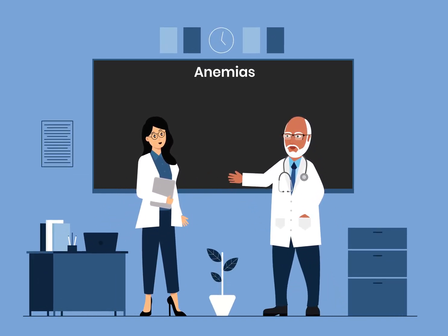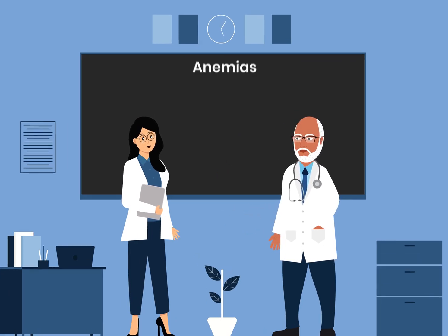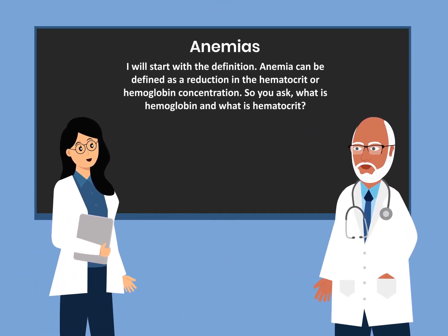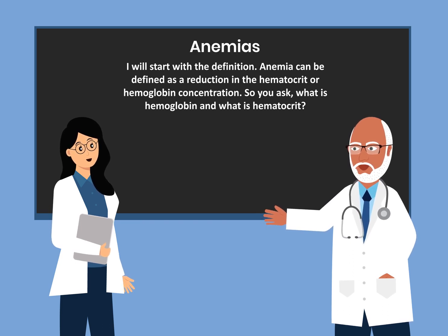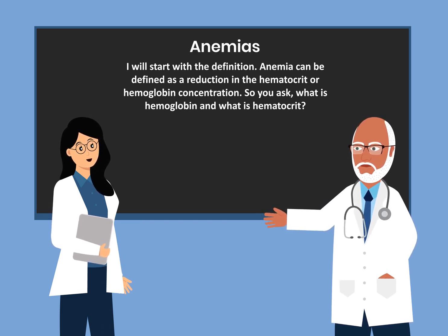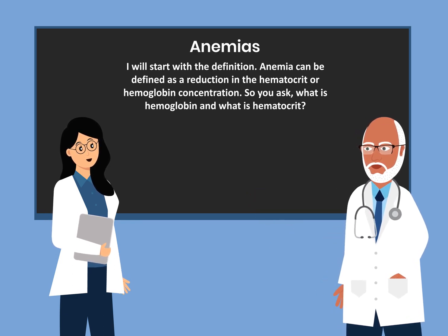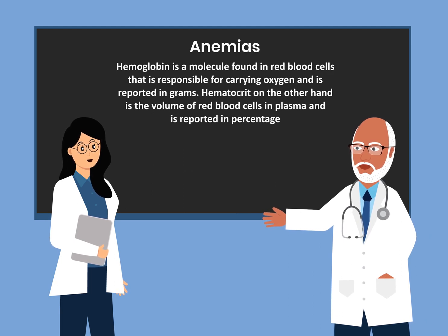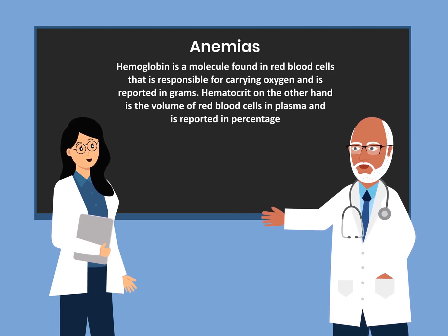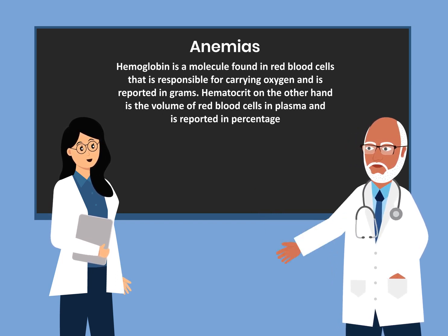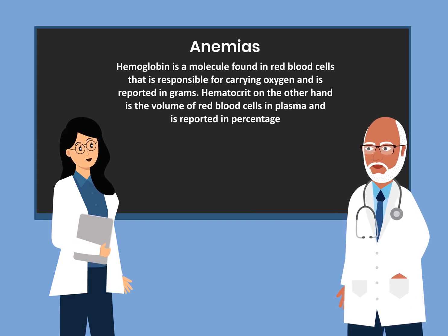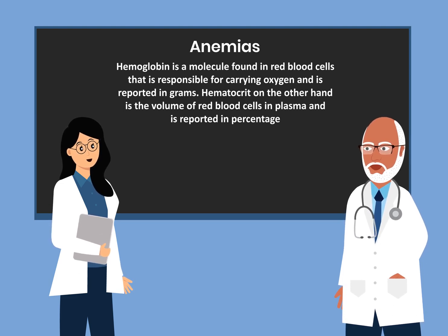Today I want to talk with you about anemia. I will start with the definition. Anemia can be defined as a reduction in the hematocrit or hemoglobin concentration. Hemoglobin is a molecule found in red blood cells that is responsible for carrying oxygen and is reported in grams. Hematocrit, on the other hand, is the volume of red blood cells in plasma and is reported in percentage.